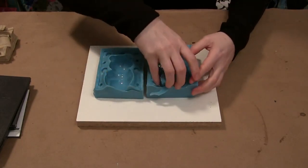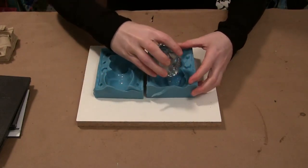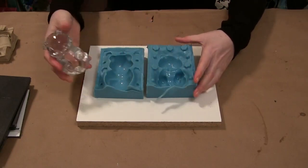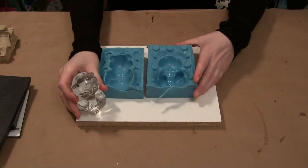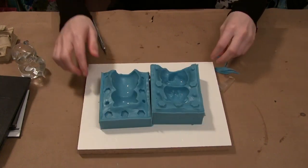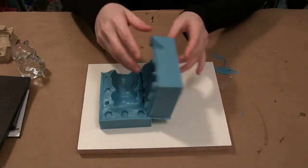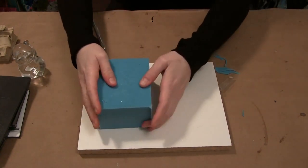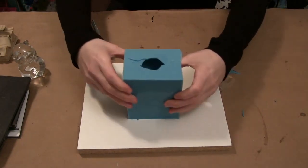And that's it! I can pop my model out of the mold. You can see perfect detail is replicated on both sides of the mold. I can just assemble each side, it locks in together perfectly, and I'm ready to move on to castings.